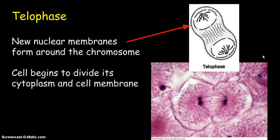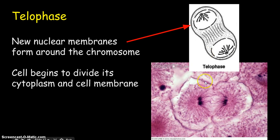Then we have telophase, which is the last phase of mitosis, where a new nucleus begins to form around these chromosomes, and another new nucleus begins to form around the other chromosomes, and the cell actually begins to pinch off. The two daughter cells are beginning to form, and you can see that here in the micrograph — these two cells are actually one cell right now, but very shortly they will actually be two daughter cells. The cytoplasm begins to divide, and the cell membrane will also divide during this process.